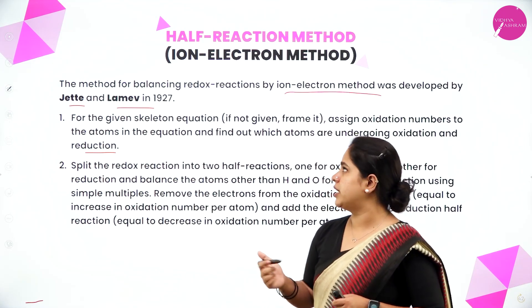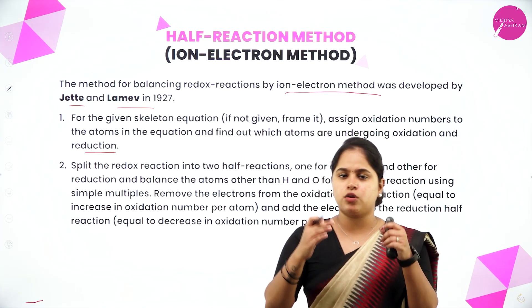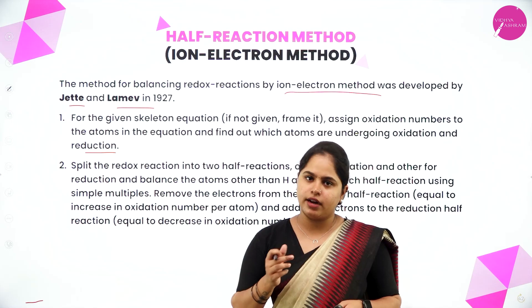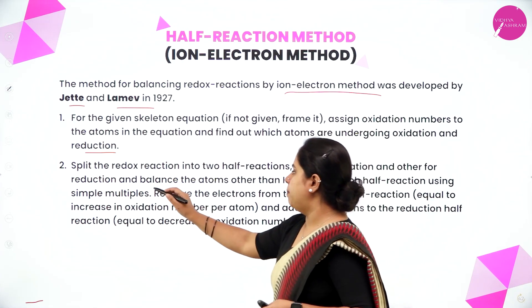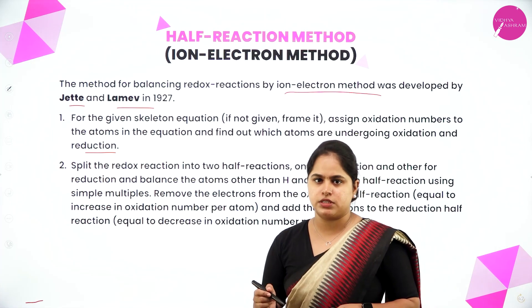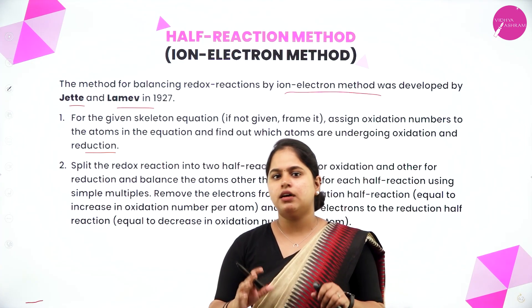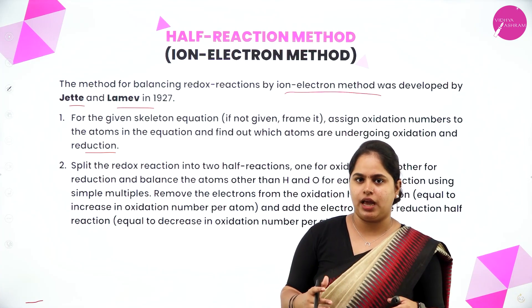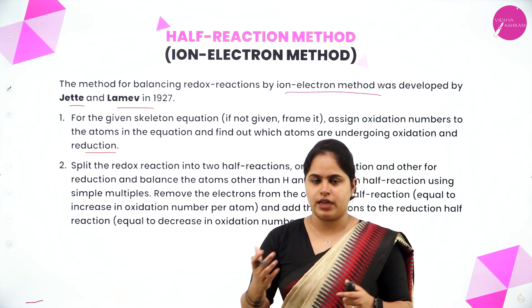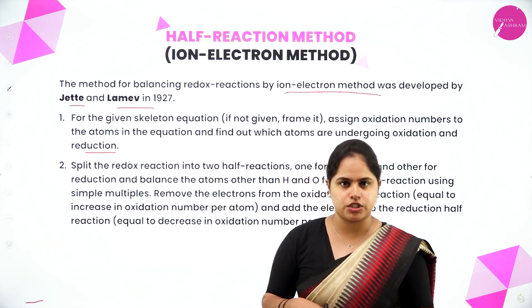The next step is to split the redox reaction into two half reactions — the method itself is called the half reaction method or ion electron method. One will be the oxidation half reaction and the other will be the reduction half reaction. Then balance the atoms other than hydrogen and oxygen for each half reaction using simple multiples, so that the number of atoms is equal on both sides.